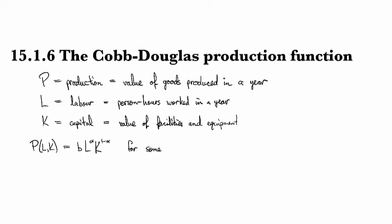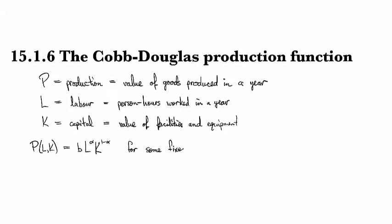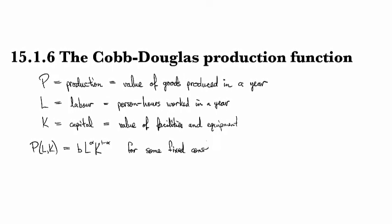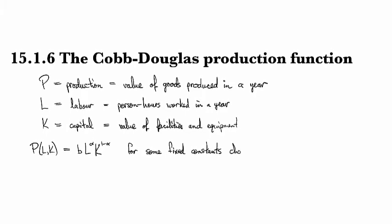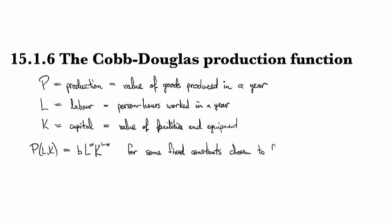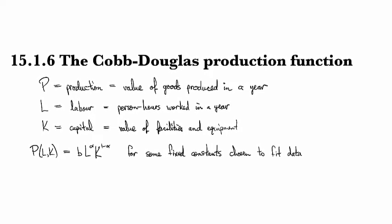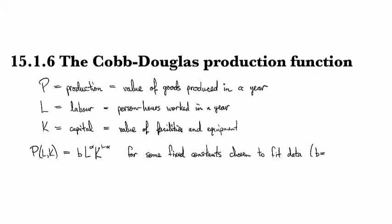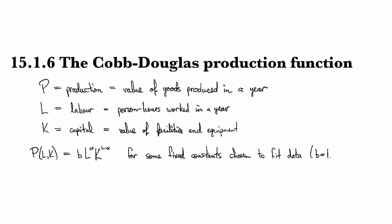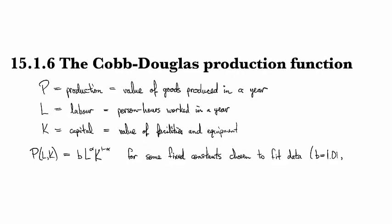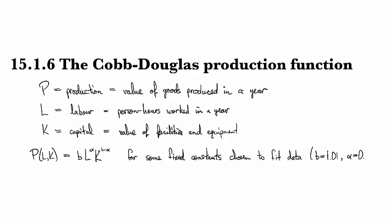And maybe I should emphasize fixed constants chosen to fit data. For the data that Cobb-Douglas looked at, they used 1.01 for B and alpha was three-quarters.